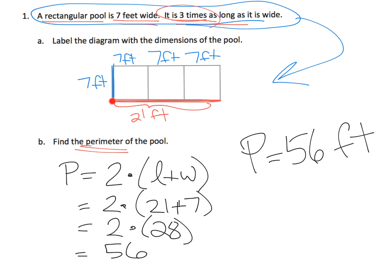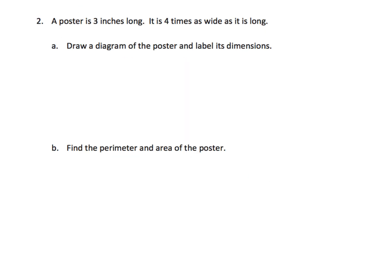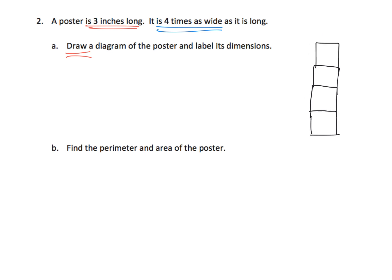That means the distance to walk all the way around the pool is 56 feet. Here we basically have a similar problem, only this time they're going to make us draw the diagram. It says a poster is three inches long. It is four times as wide as it is long. So I'm going to draw three inches long and then four times as wide, so that's going to be one, two, three, four. So this part is the three inches long, right here, and then the width is four times as wide.